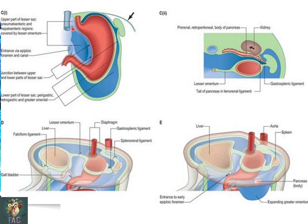Here you can see further development in the lesser sac or omental bursa. This is the pancreatic pneumoenteric recess, also called the superior recess of the lesser omentum. This area shows the epiploic foramen where the lesser sac opens into the greater sac. These areas show the junction where the upper and lower parts of the lesser sac connect — the perigastric recess. The dotted arrow shows the retrogastric recess, and the area below the stomach is called the greater omental bursa of the lesser sac. Here you can see the developing stomach, the lesser omentum forming, the gastrosplenic ligament, the spleen, the kidneys, and the pancreas which has become retroperitoneal.